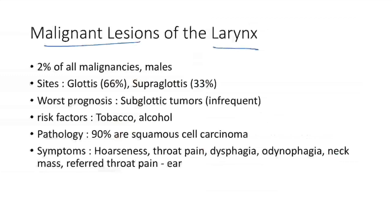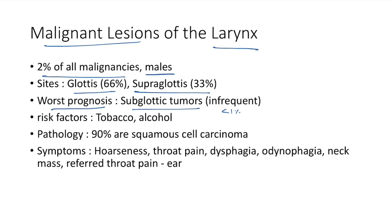Malignant lesions of the larynx account for 2% of all malignancies. They are more common in males. Glottic region accounts for 66% of cases, supraglottic region for 33%. The worst prognosis is for subglottic tumors — very infrequent, less than 1% of cases. Risk factors are tobacco and alcohol. Ninety percent of cases are squamous cell carcinoma.